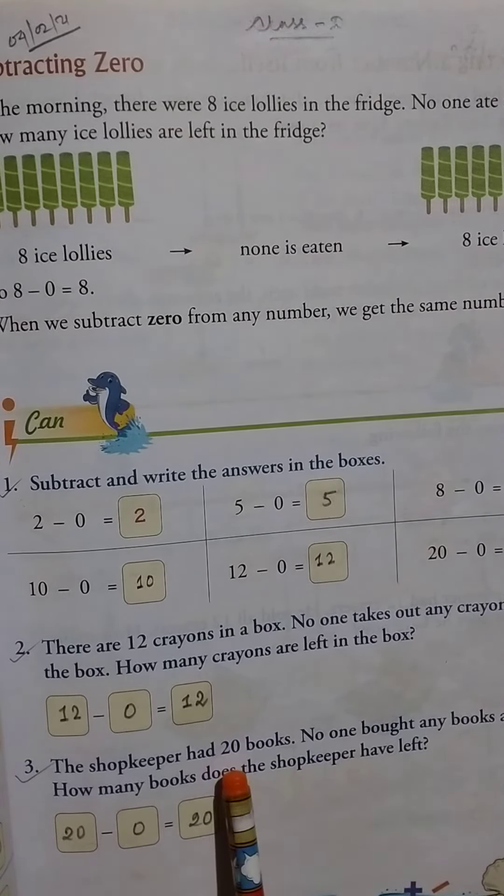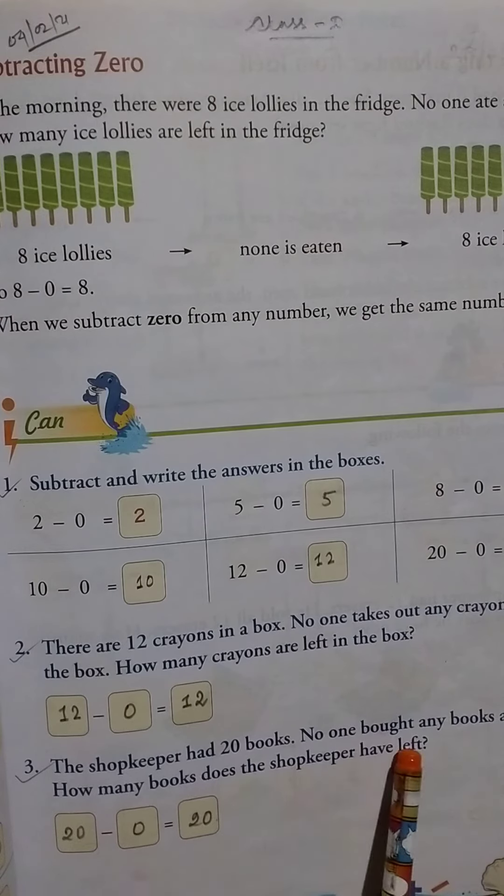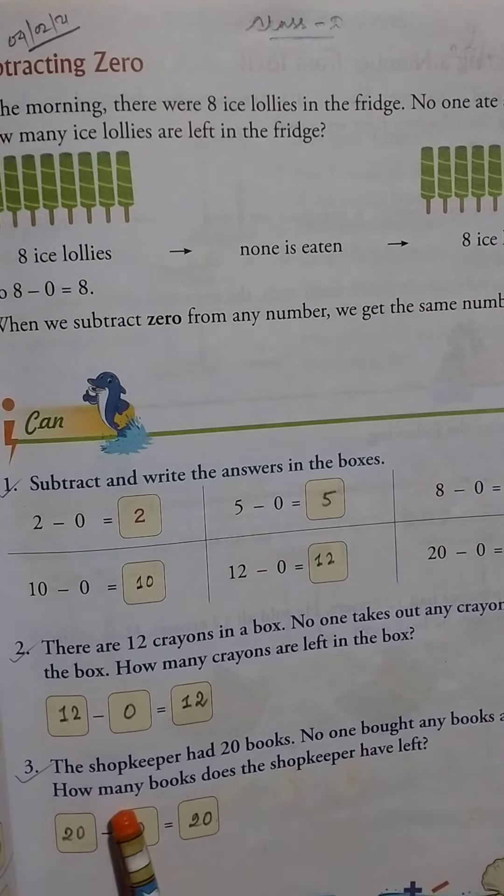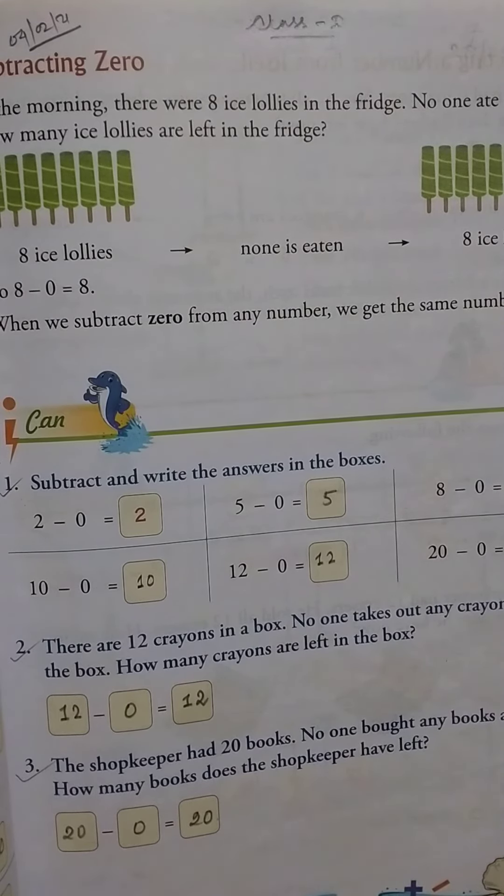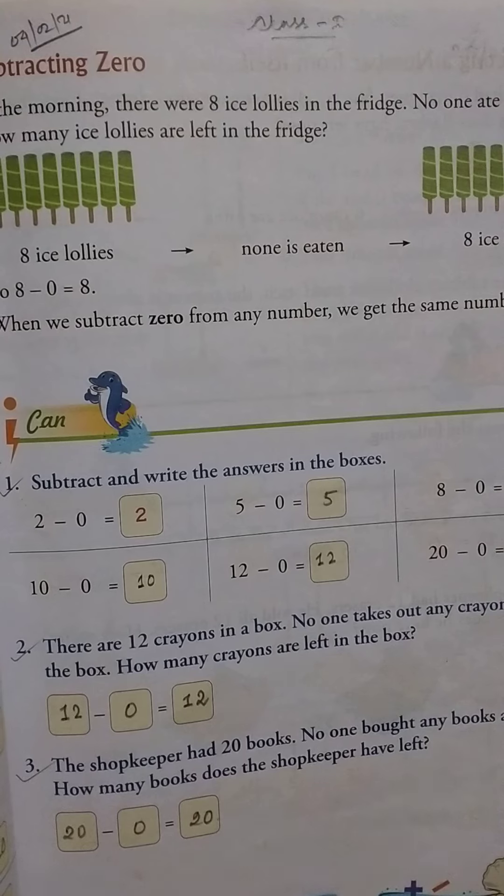Number three: The shopkeeper had twenty books. No one bought any books all day. How many books does the shopkeeper have left? So 20 - 0 = 20. Thank you.